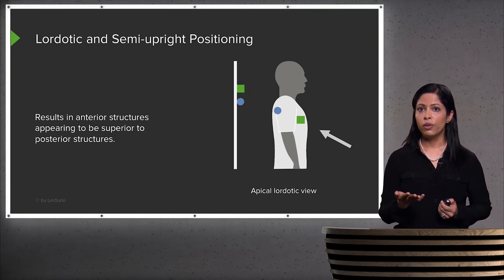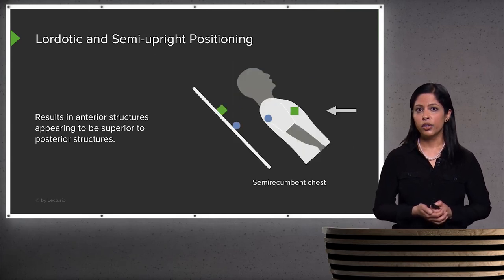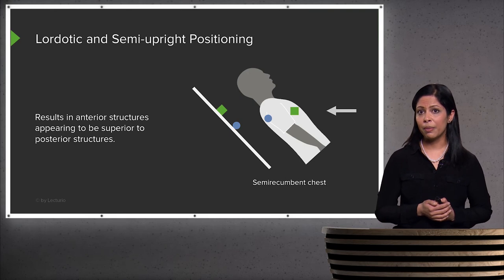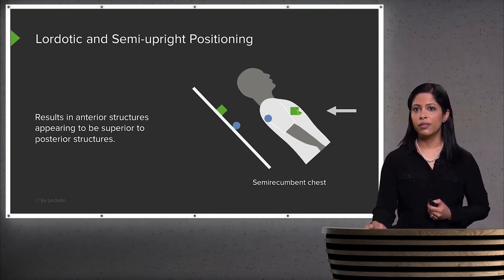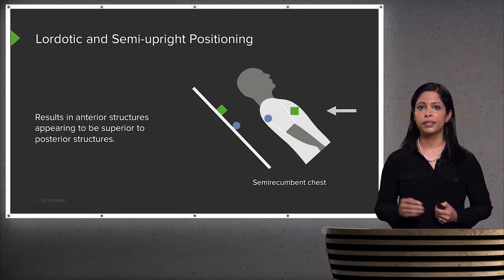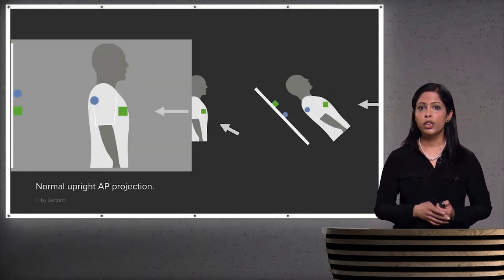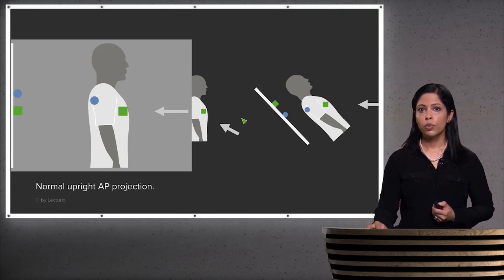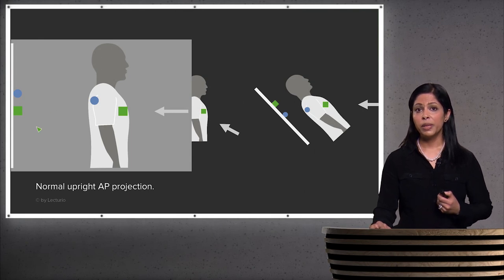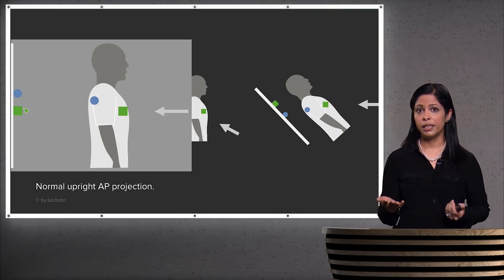It's important to recognize lordotic and semi-upright positioning so that when you see the image, you identify this as a normal artifact of the positioning. On a normal AP upright, the beam goes in perpendicular to the patient and exits posteriorly — because it's straight perpendicular, you have normal positioning with the square appearing inferior to the circle, which reflects the true anatomical relationship.